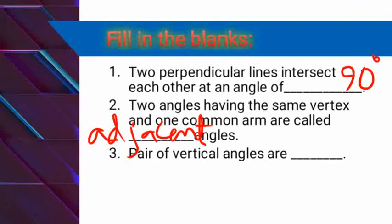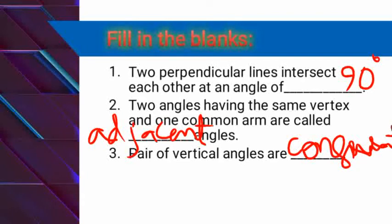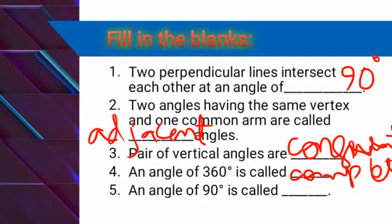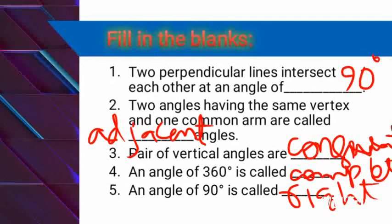Third question: a pair of vertical angles are — the answer is congruent, meaning equal. Also, an angle of 360 degrees is called a complete angle. And the last one: an angle of 90 degrees is called a right angle.